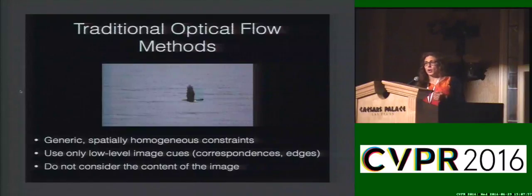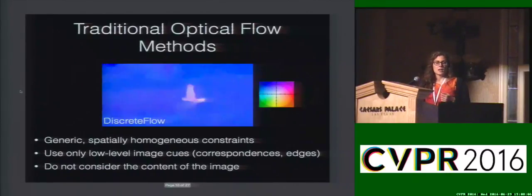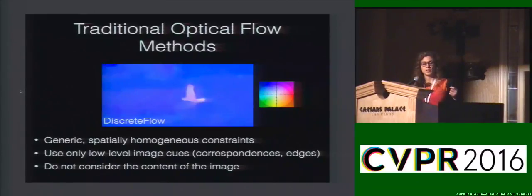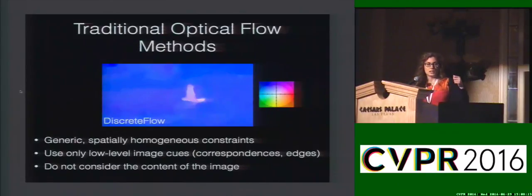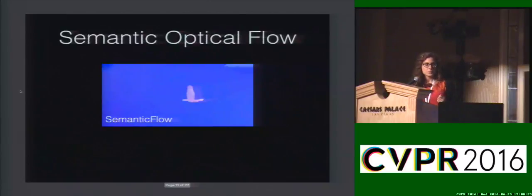Traditional optical flow methods have ignored the content of the image. They've used low-level image cues like correspondences or edges. As an example, here I'm showing the result from discrete flow, which is one of the top performing flow methods. As we can see, the flow is blurry, indicating that it might be inaccurate, especially at motion boundaries and in untextured regions like the water. For the same sequence, semantic optical flow produces much better results.